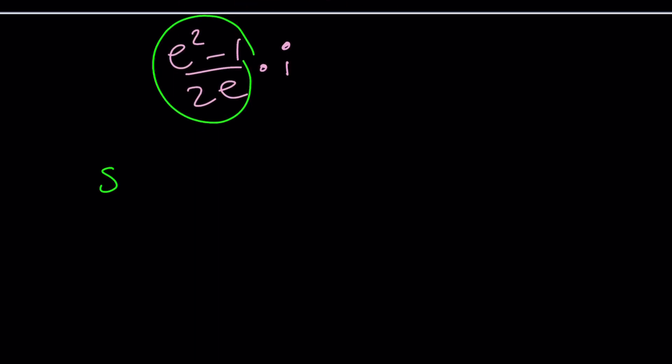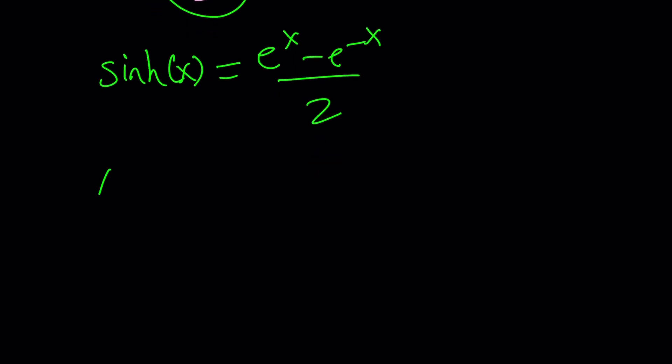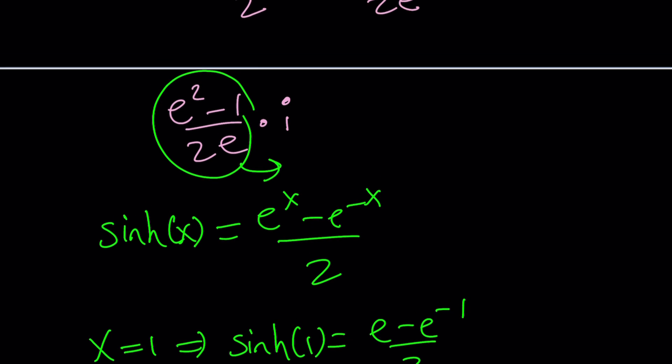Because if you remember, hyperbolic sine of x was defined as this. And in this case, if you replace x with 1, then you get hyperbolic sine of 1, which is e minus e to the power of negative 1 divided by 2, which is exactly what we have. Does that make sense? That's why I wanted to talk about the hyperbolic functions. And guess what? As a bonus, I'm going to give you a couple different ways to express it. But before that, let me tell you.